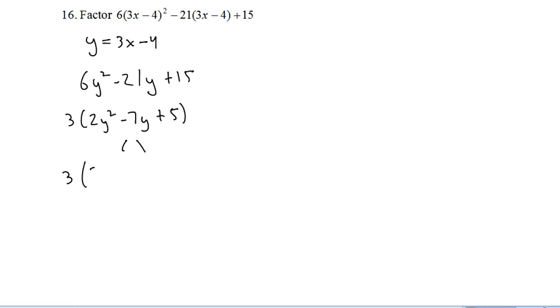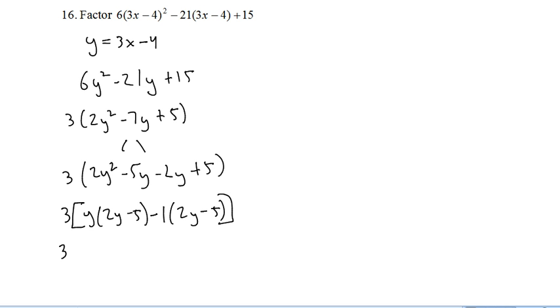That's going to leave me with 2y squared minus 5y minus 2y plus 5. I can only factor a y out of that. Now I need to factor out a negative 1 so that I get 2y minus 5 inside the brackets in my second group. Now I can pull out a 2y minus 5 out of both of those. It'll go outside with the 3, and left inside the big brackets is y minus 1.